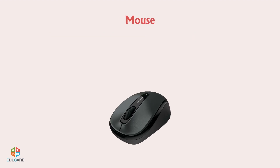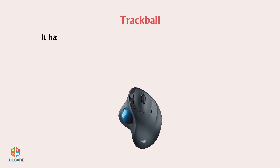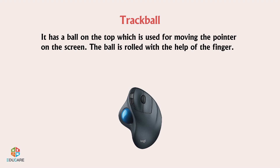Mouse: It is used for selecting, pointing, and dragging items while working on the computer. Trackball: It has a ball on the top which is used for moving the pointer on the screen. The ball is rolled with the help of the finger.